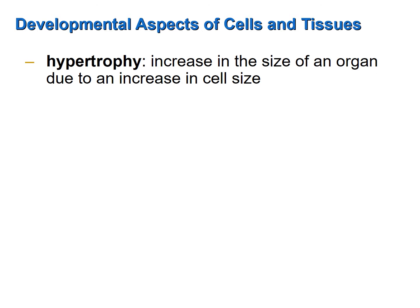Even after a tissue loses its ability to undergo cell division, it can still increase in size, and therefore the organ that the tissue composes can still increase in size. This is achieved through a process called hypertrophy. Hypertrophy is the increase in the size of an organ due to an increase in cell size.